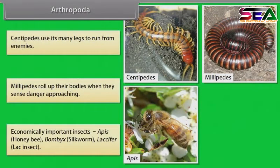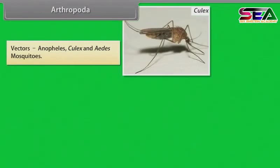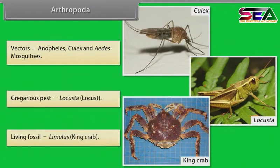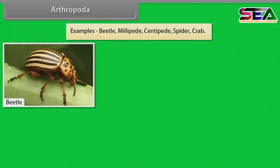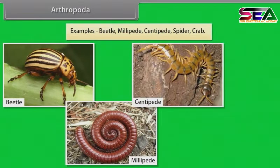Economically important insects: Apis (honeybee), Bombyx (silkworm), and Lacifer (lac insect). Vectors: Anopheles, Culex and Aedes mosquitoes. Gregarious pest: Locusta (locust). Living fossil: Limulus (King Crab). Other examples: Beetle, Millipede, Centipede, Spider, Crab.